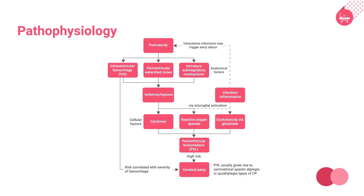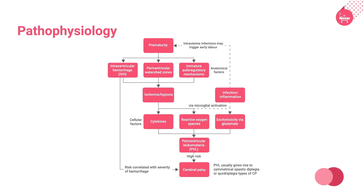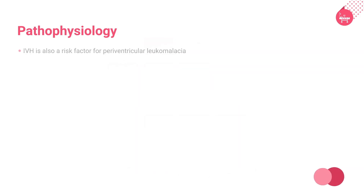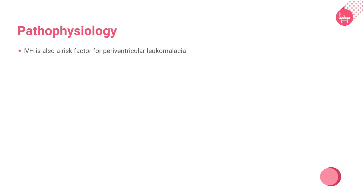Intraventricular hemorrhage results in bleeding in the subependymal matrix, which passes on to the ventricles of the brain. This further increases the risk of cerebral palsy. Intraventricular hemorrhage is also a risk factor for paraventricular leukomalacia.